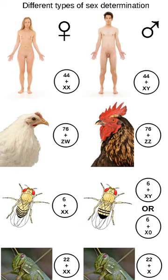A sex determination system is a biological system that determines the development of sexual characteristics in an organism. Most organisms that create their offspring using sexual reproduction have two sexes. Occasionally, there are hermaphrodites in place of one or both sexes. There are also some species that are only one sex due to parthenogenesis, the act of a female reproducing without fertilization.